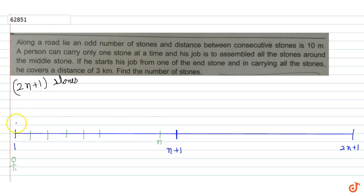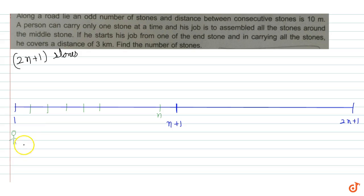Now if the person picks the stone from this corner to the center, from the end to the middle there are n stones, so the distance traveled is 10n. Then he picks the next stone.